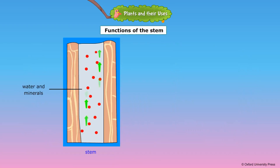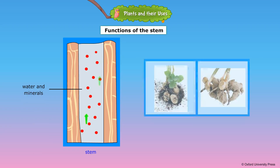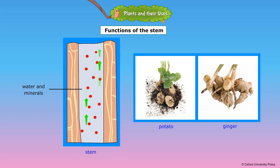The stem carries water and mineral salts from the roots to the rest of the plant. At the same time, it carries food made by the leaves to the rest of the plant. Sometimes extra food is stored in the stem. Potato and ginger are examples of plants that store food in the stem.